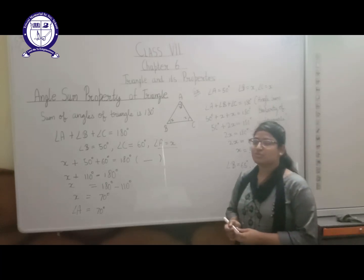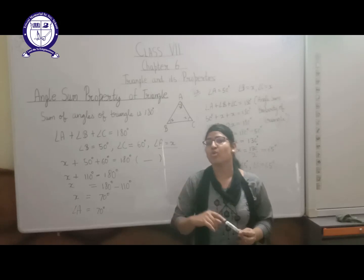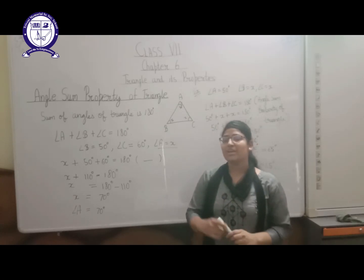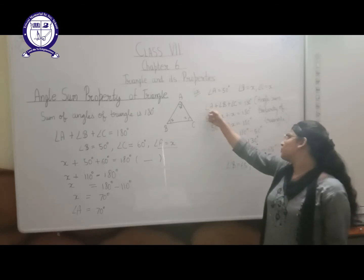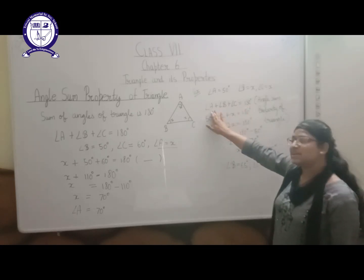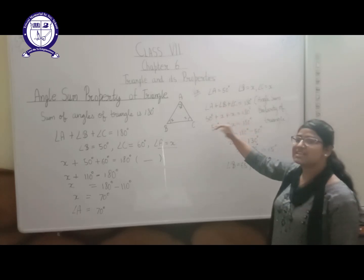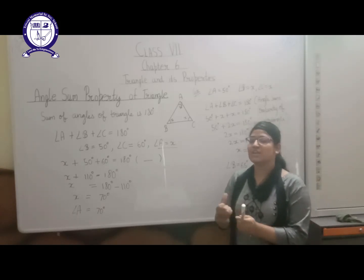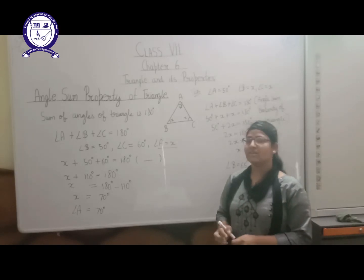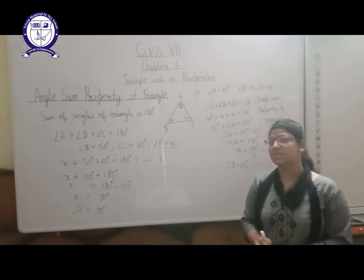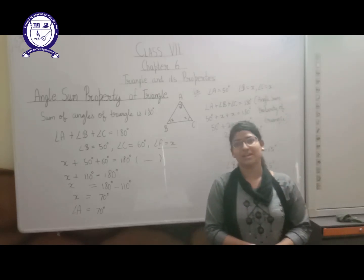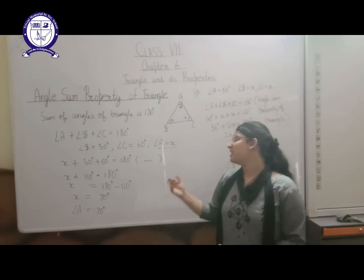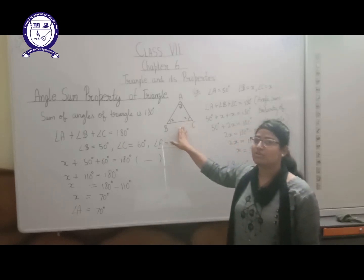Suppose all 3 angles are X, X, and X — meaning all angles are equal, as in an equilateral triangle. By the angle sum property: X plus X plus X equals 180 degrees, so 3X equals 180, and X comes out to be 60 degrees. This confirms that in an equilateral triangle, all angles are equal and each measures 60 degrees. Like this, you can find any unknown angle of a given triangle.